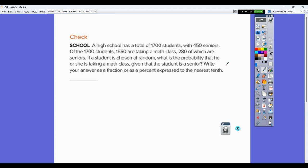A high school has a total of 1,700 students with 450 seniors. Of the 1,700 students, 1,550 are taking a math class, 280 of which are seniors. Now, you have to be very careful and understand this. This is 280 of the math class. If a student is chosen at random, what is the probability that he or she is taking a math class given that the student is a senior?